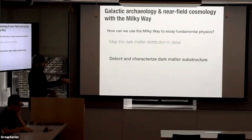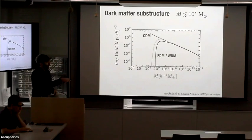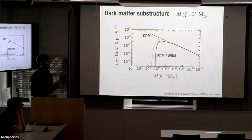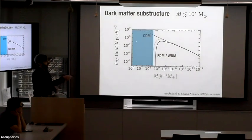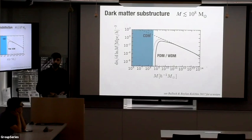By detecting and characterizing dark matter substructure, I mean trying to find very low-mass things — substructure below the mass of the dwarf galaxies that we see. If we could find a large population of these things, it would place constraints on effective models for dark matter that don't produce them.